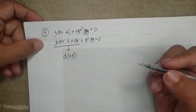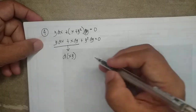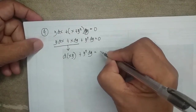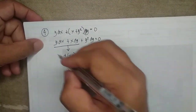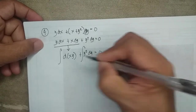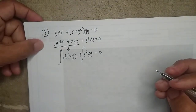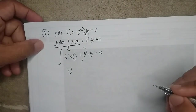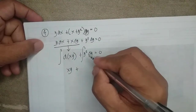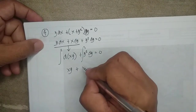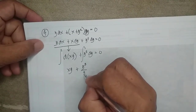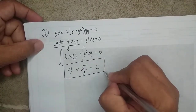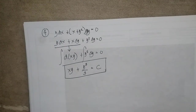This is the same as d(xy) plus y² dy = 0. To get the solution, all we have to do is integrate this. Integrating the derivative of xy gives us xy, plus integrating y² dy gives y³/3, equated to c. This is your solution. Simple.